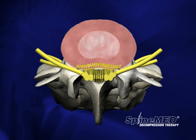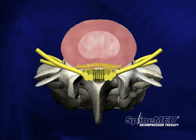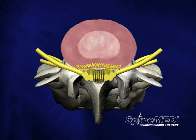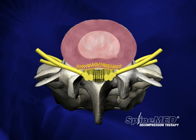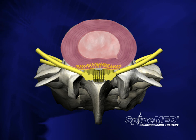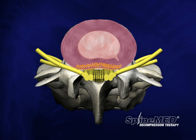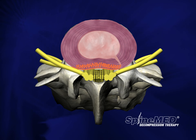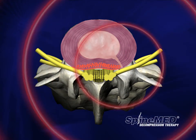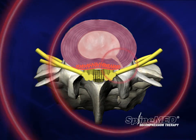Furthermore, disc dehydration causes the tough, pliable outer coating of the disc to become brittle and susceptible to cracks and tears that may lead to disc herniations. As we learned earlier, this outer layer of the disc has its own nerve supply, and small cracks or tears in the annulus alone may cause severe low back pain.